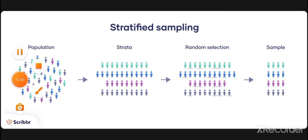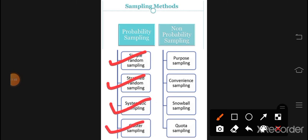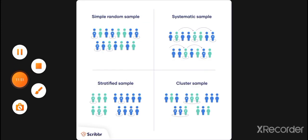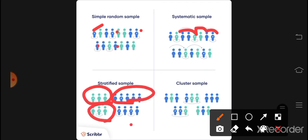To summarize probability sampling: Simple Random — equal chance for everyone. Systemic — we jump at intervals. Stratified — selected from each subgroup. Cluster — takes a whole group. These are the four types of probability sampling and the differences between them.